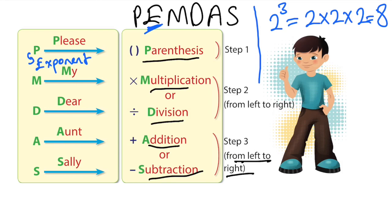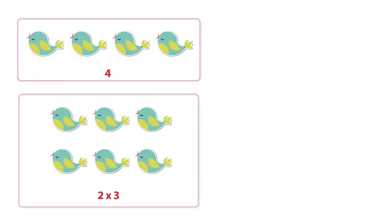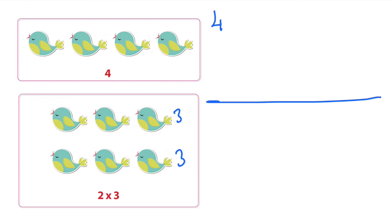Now let's count how many birds we have. In the first box there are four birds. In the second box there are three birds here and three birds here — two times three. Now let's write the same expression: four plus two times three.